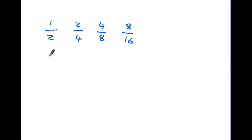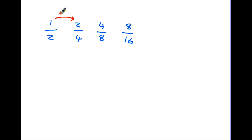I've written the set of fractions out again — these are the ones we've decided are equivalents, in other words they're all the same. I want to look at what has actually happened to the numbers. Let's look at these first two: we agreed two quarters is the same as a half. If we take the one on top, it's been multiplied by two — one times two is two. The two on the bottom has also been multiplied by two.